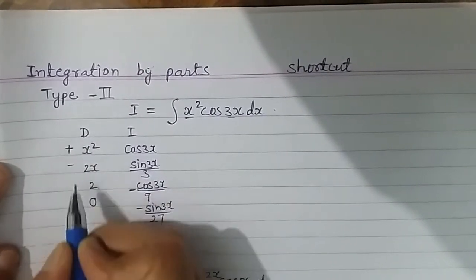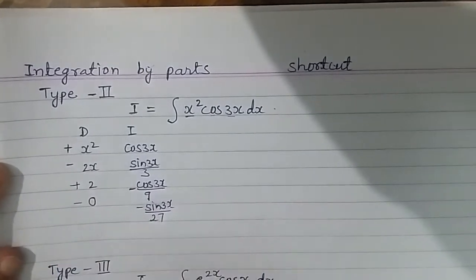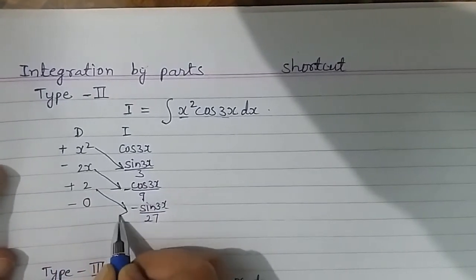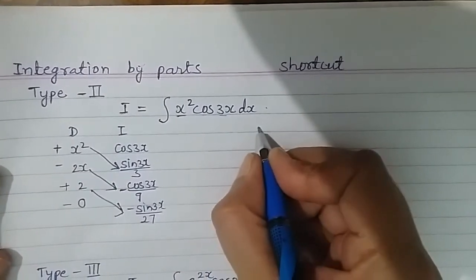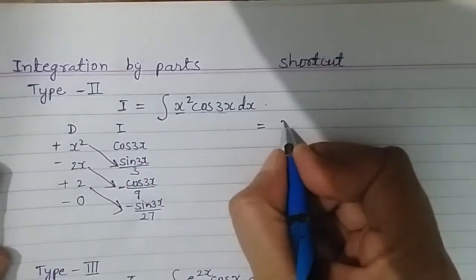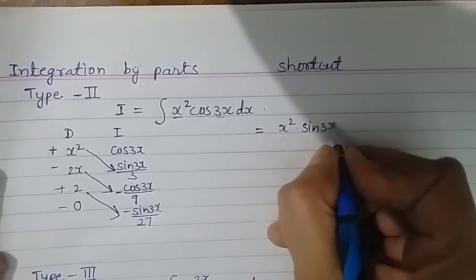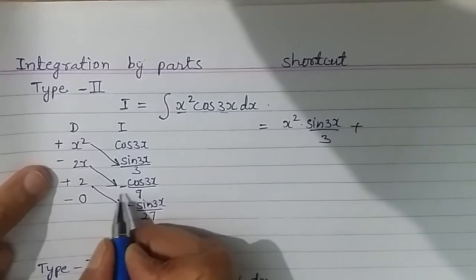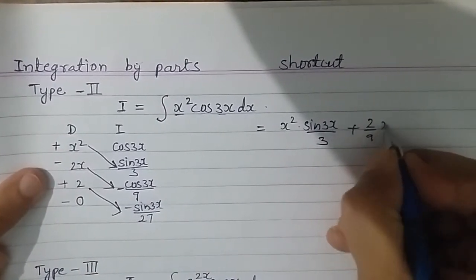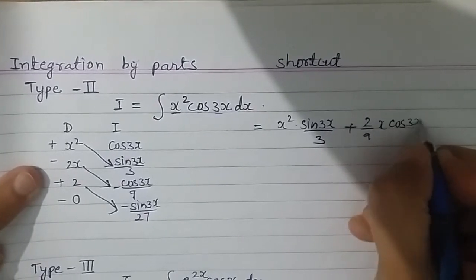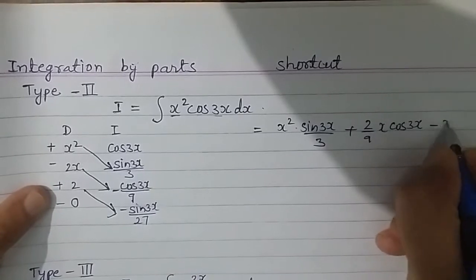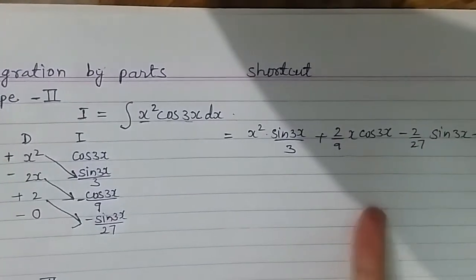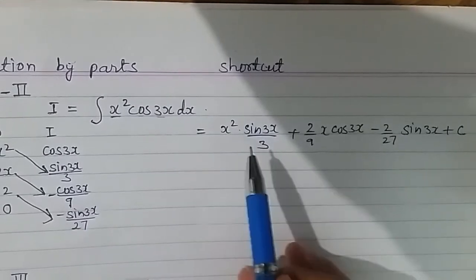Now I assign alternating signs: +, −, +, −. Then I multiply diagonally — D-entry times the next I-entry. The answer is: x² · (sin 3x / 3) + (2/9)x cos 3x − (2/27) sin 3x + C. That's the complete answer in one step, shorter than the traditional method.